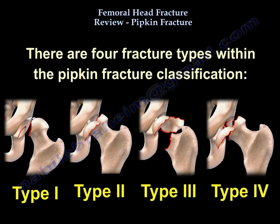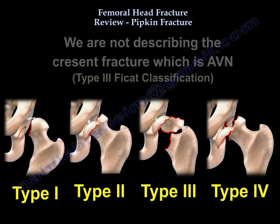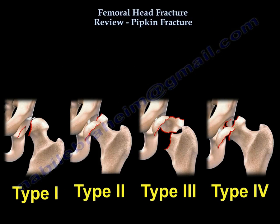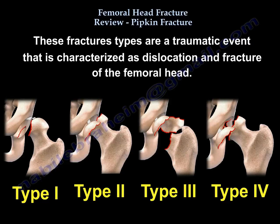There are four types of femoral head fractures. Before describing them, it is important to clarify that we are not describing the crescent fracture of avascular necrosis, which is type 3 FICAT. We are talking about a traumatic event where there is dislocation of the hip and fracture of the femoral head.